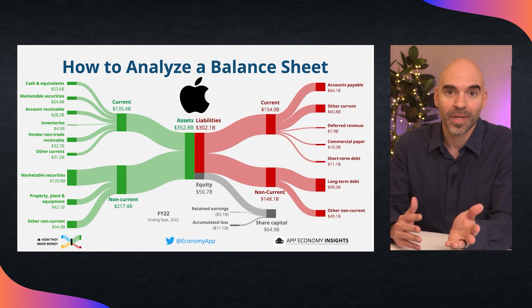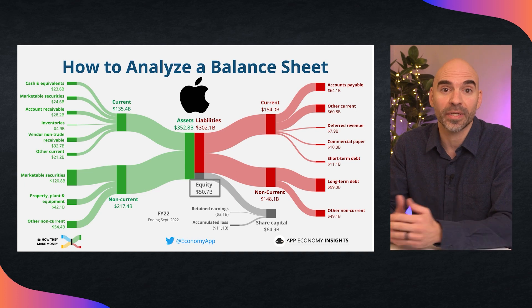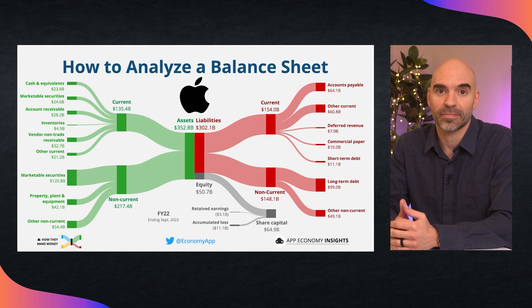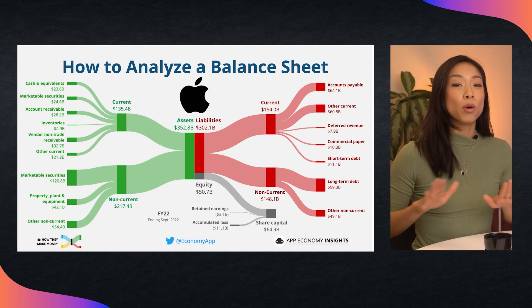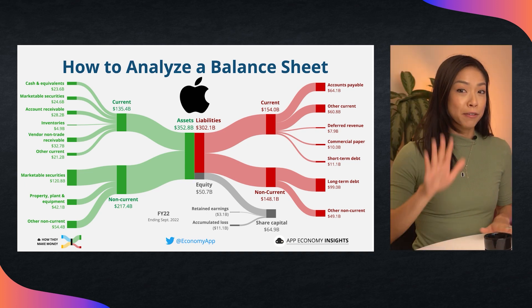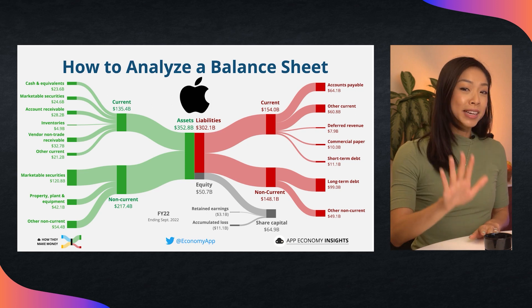Assets in green, liabilities in red, and shareholders' equity in gray. Let's analyze the balance sheet in more detail and cover five traits to look for when reviewing a company's balance sheet.